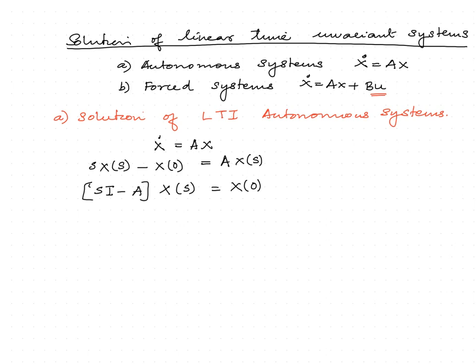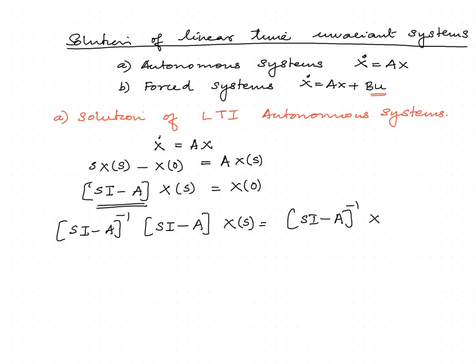It should be noted that (sI minus A) is pre-multiplied to X(s). Now we are trying to find x(t). To obtain that, we should separate X(s) from this equation. For that, we pre-multiply the given equation by (sI minus A) inverse, which results in X(s) equal to (sI minus A) inverse times x(0).